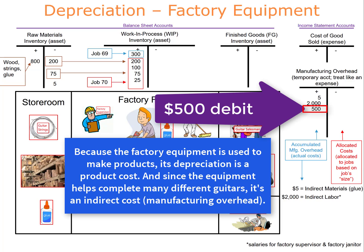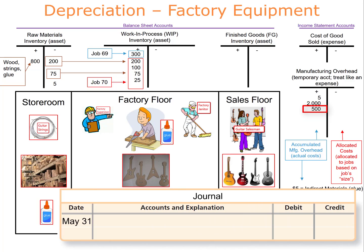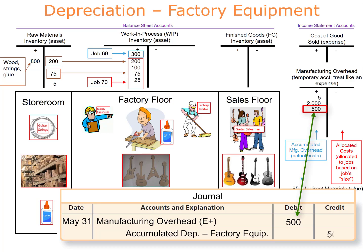The full journal entry debits manufacturing overhead — a temporary expense account — for $500, and credits accumulated depreciation — factory equipment — a contra asset — for $500. Notice we did not expense the depreciation like we normally would. This is because the factory depreciation is a product cost and cannot be expensed until the products are sold.